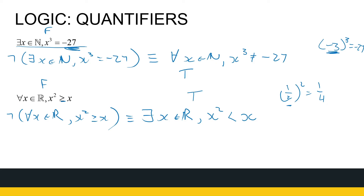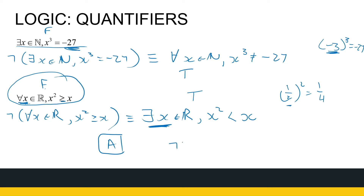Since the original statement is false, let's verify the negation: I can find a real number x such that x squared is less than x. There's the example — a half. A half squared is a quarter, which is less than a half. So that's true. This shows it's sometimes easier to prove a 'for all' statement false by proving the negation — finding one counterexample. If I prove not A is true, my conclusion is that A is false. That's where truth tables and contrapositives come in handy.